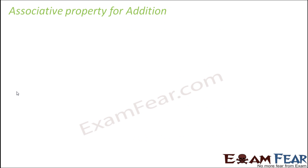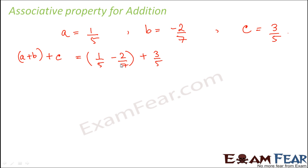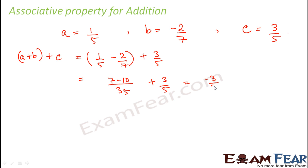We will now prove these with examples. For the associative property of addition, let a = 1/5, b = -2/7, and c = 3/5. Let us first calculate a plus (b plus c), which is 1/5 + (-2/7 + 3/5). The inner bracket gives (minus 10 plus 21) over 35... working through, we first compute 1/5 + (-2/7), which is (7 minus 10) over 35, giving minus 3 over 35.